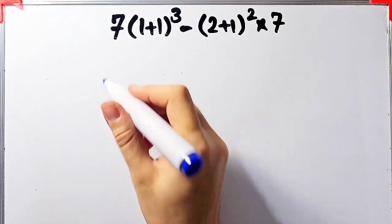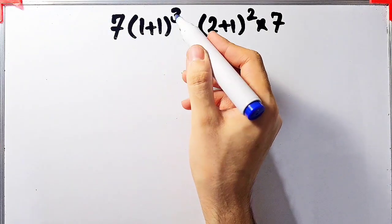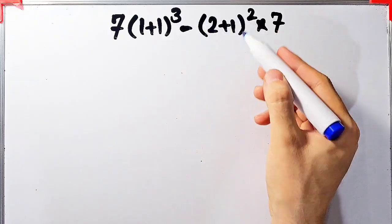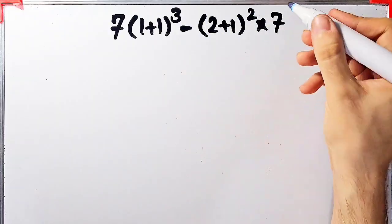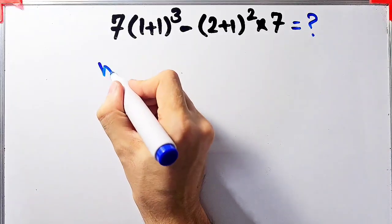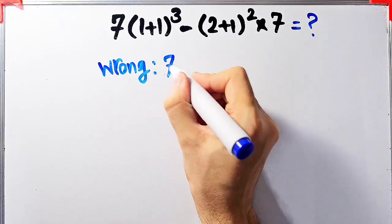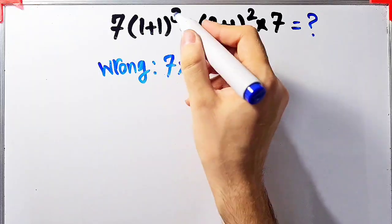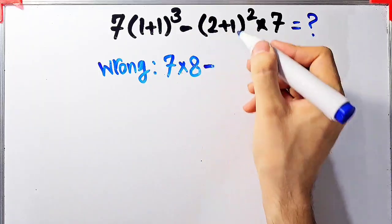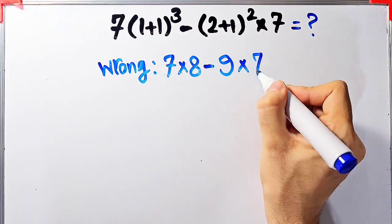Let's solve another question about the PEMDAS rule: 7 × (1 + 1)³ − (2 + 1)² × 7. In the wrong way of solving this question, some people do: 7 × 2³ = 8, then minus 3² = 9, times 7.